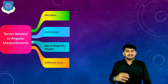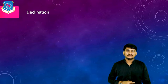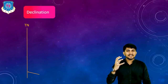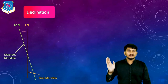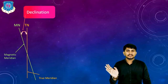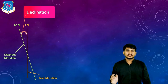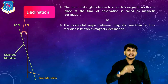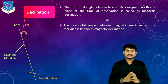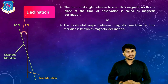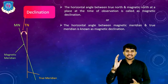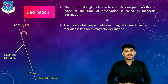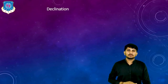Now let us discuss declination. What is declination? Suppose this is the true north or true meridian line, and this is the magnetic north or magnetic meridian line. The horizontal angle made between magnetic meridian and true meridian is called as declination. The horizontal angle between true north and magnetic north at a place at the time of observation is called as magnetic declination. This declination is of two types.